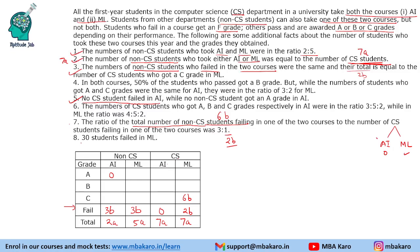We are given 30 students failed in ML. In ML we have 3B (CS) plus 2B (non-CS), so 5B equals 30, giving B equals 6. Now we can fill the values of failed students: 18, 18, 12, and 36.